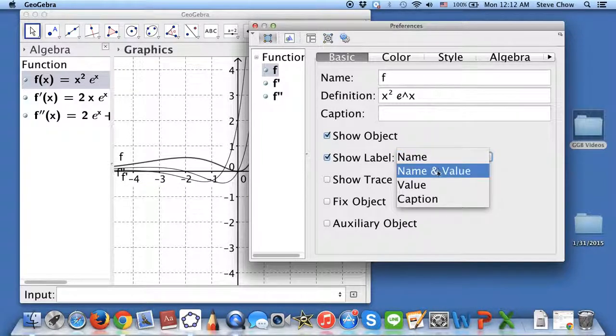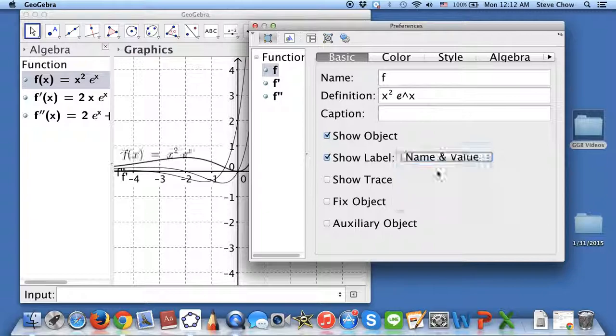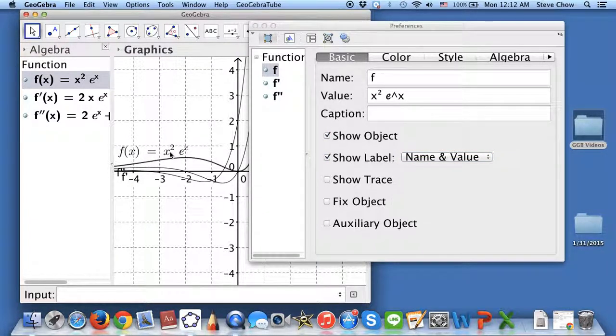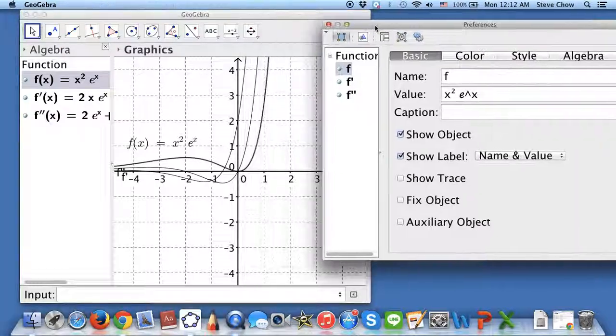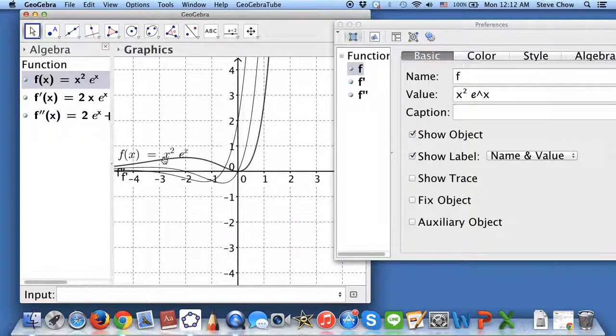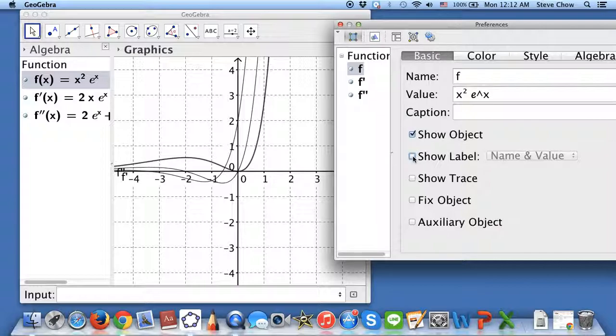Even though you can choose, instead of name, you can choose name and value. So that way, you can see this is f of x is equal to x squared times e to the x, which is the original function. But it just doesn't move to the place that you want. So it's very limited. I don't like that. So let me just check that off.